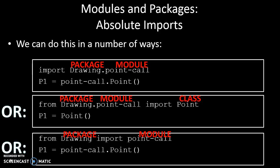And remember to say this in a different way. In the top one, we have a directory called Drawing and a file called point-call. In the second one, we have a directory called Drawing, a module called point-call, and then a class within that module called Point. And in the third one, it's a directory called Drawing and a file called point-call.